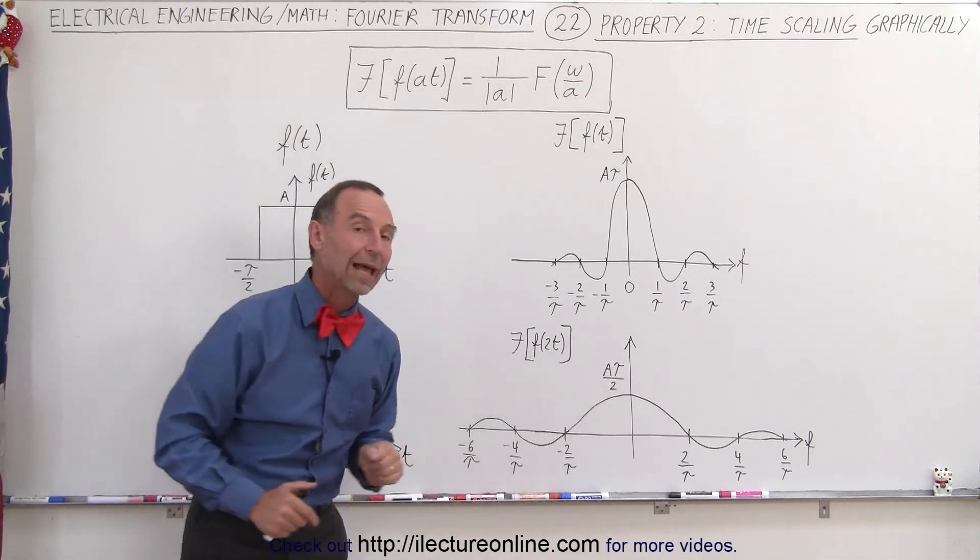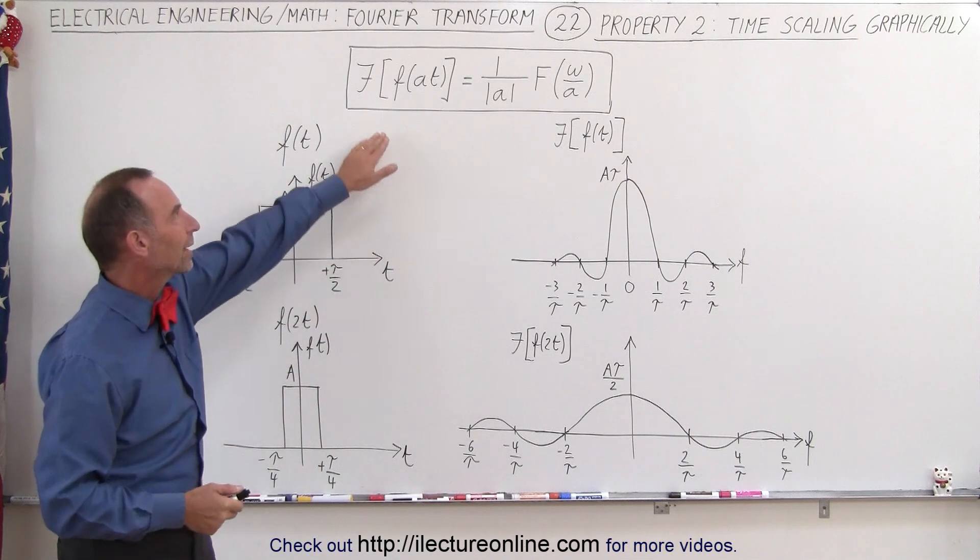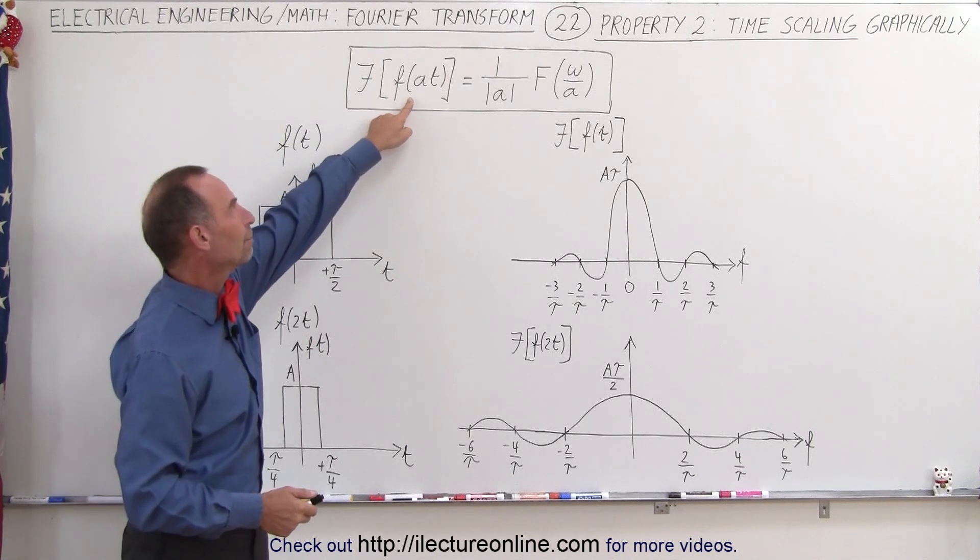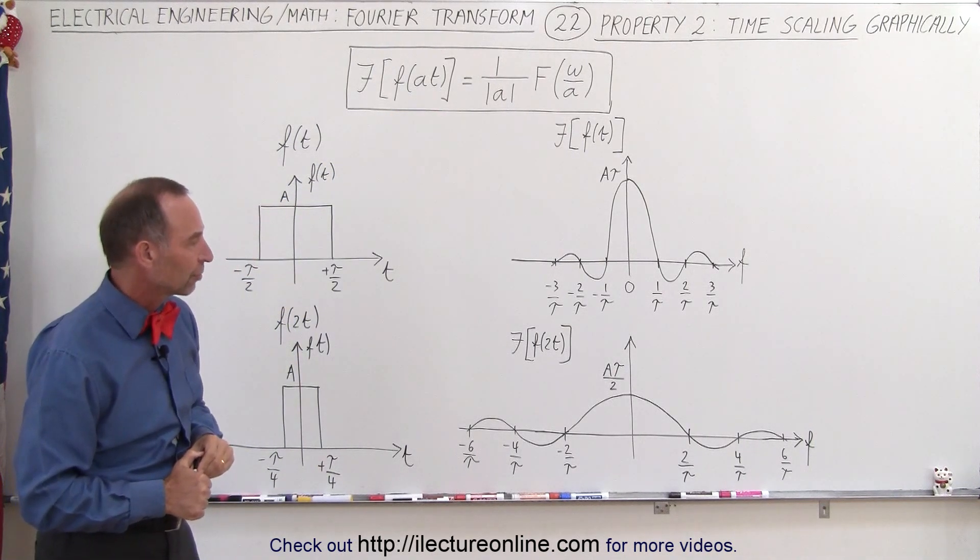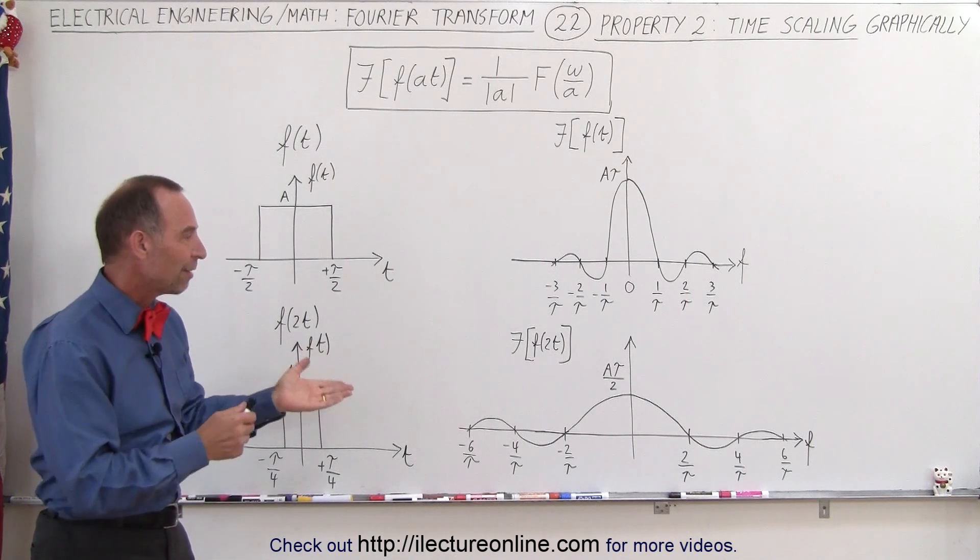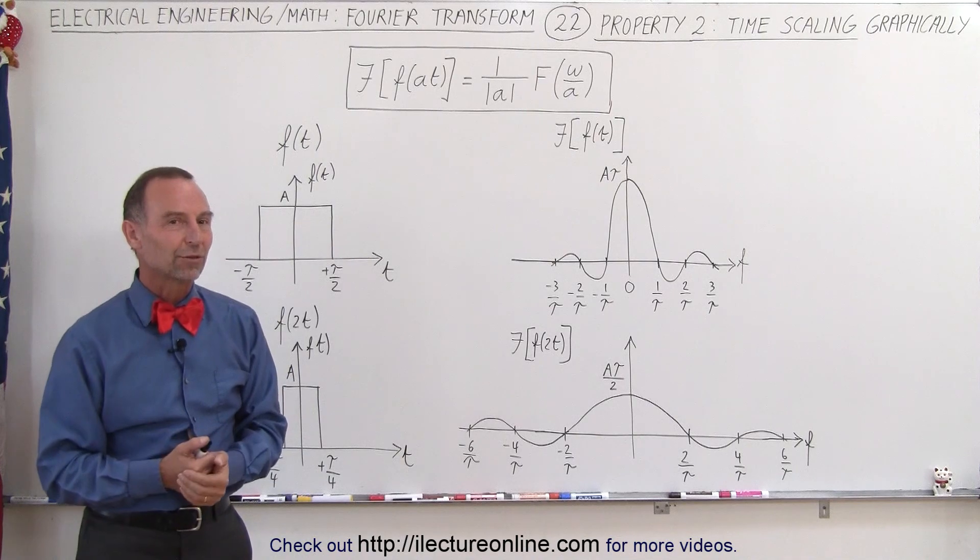So those are the two effects that you get when you do a time scaling event in your input function, relative to the Fourier transform in the output function. And that's how you can see graphically or visually the difference between the two. That's how it works in Fourier transforms.